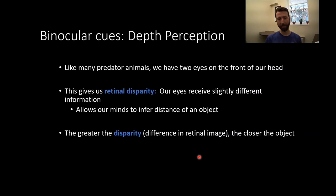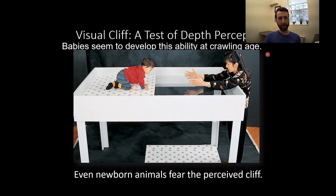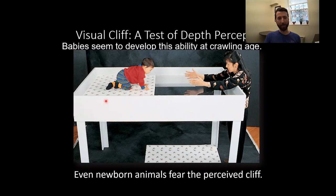The visual cliff is a test of depth perception. Basically, a baby is placed on a cliff — it's glass, so we're not risking the baby falling — but the baby sits on a patterned shelf, and below there is a shelf with the same pattern. Even a newborn can tell that this pattern is smaller and farther away, which denotes depth, and the baby will not crawl off over the cliff and risk hurting itself. It can tell that one part is further away than another.